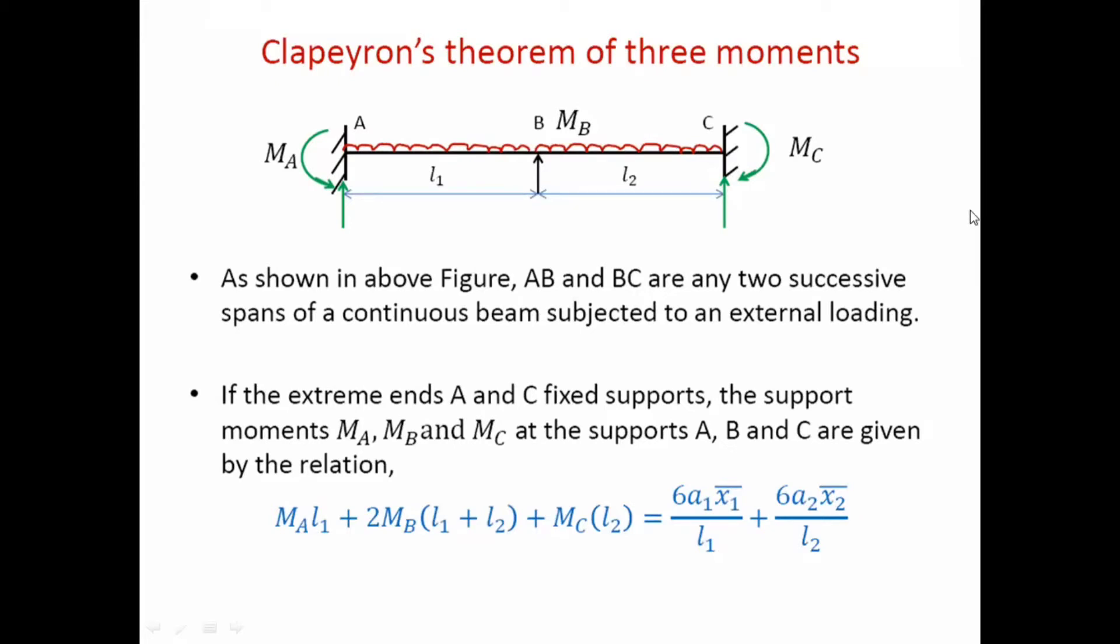Here in this diagram, we can see there are two spans AB and BC. Both spans are approximately the same. One is L1, another is L2, and both spans are subjected to a UDL throughout the span.